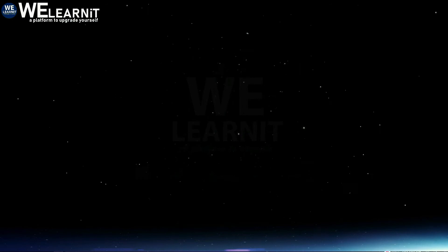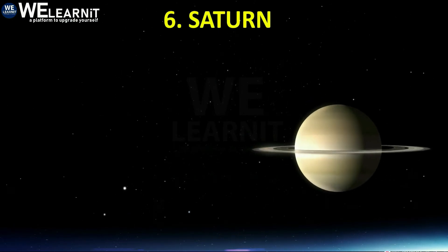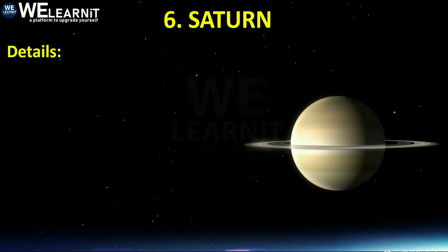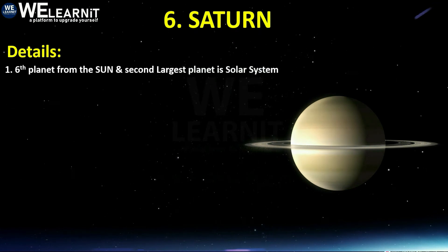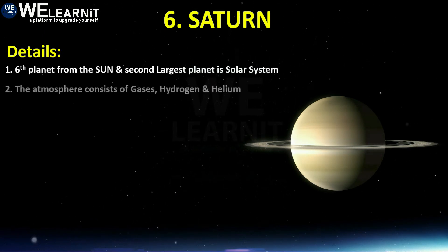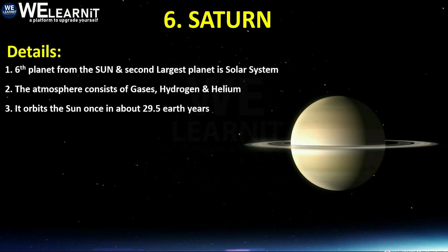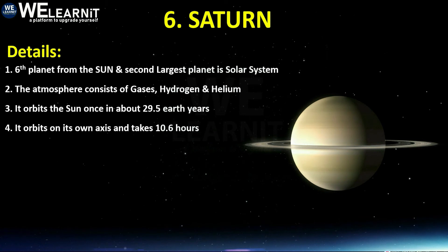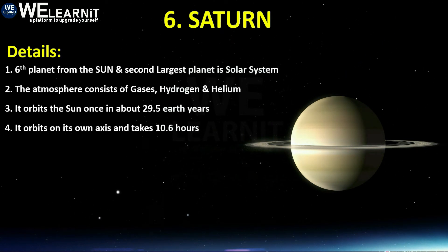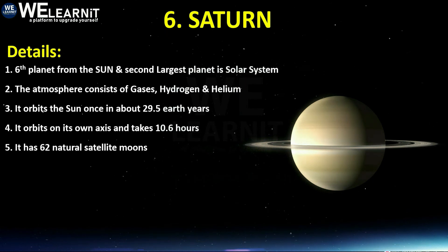The sixth planet is Saturn, the second largest planet in our solar system. Its atmosphere consists of hydrogen and helium. It orbits the Sun once in about 29.5 Earth years. Saturn orbits on its own axis and takes 10.6 hours to complete one round. It has 62 natural satellites — 62 moons.